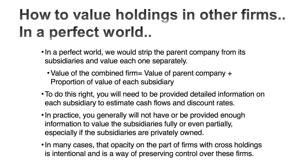Now you see why cross holdings are so difficult to value — first you must figure out how the accountants have dealt with them. In a perfect world, I would value the parent company on a standalone basis, then value each cross holding separately regardless of whether you own five percent, ten percent, or sixty-five percent, and take the percentage that belongs to you. The advantage is I can assign different costs of capital, growth rates, and risk profiles to each company.